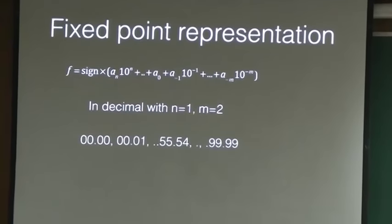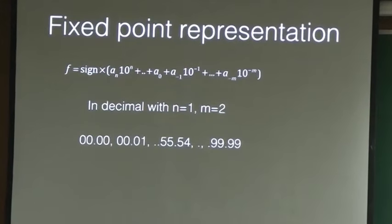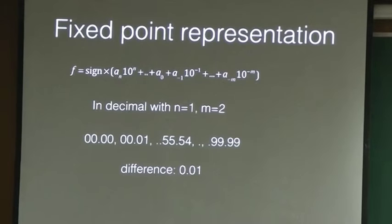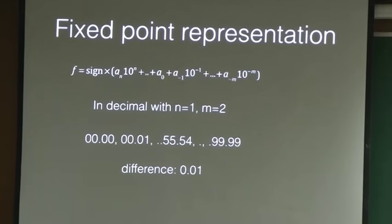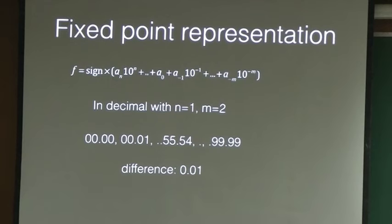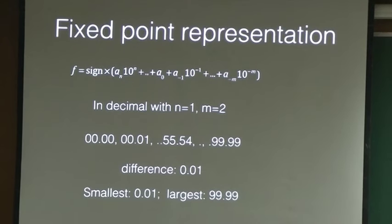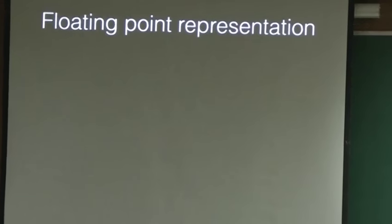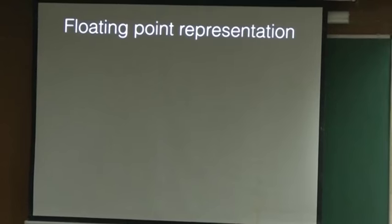The spacing is 0.01 and the numbers are uniformly spaced. The difference is 0.01, but it turns out you cannot represent all of the very small set of numbers. The largest number is close to 100 and the smallest non-zero number is 0.01. But you can do better - and that is what computer scientists thought about and they said let us do floating point representation. It is a fascinating interpretation.